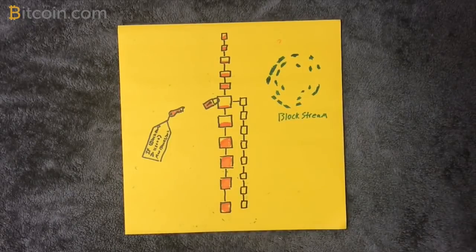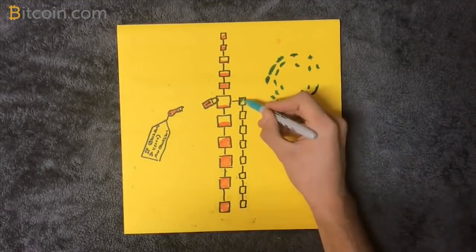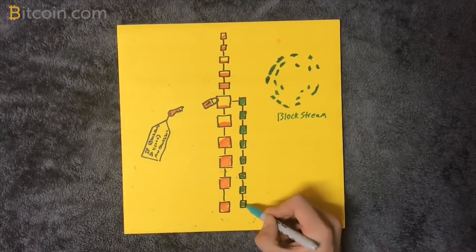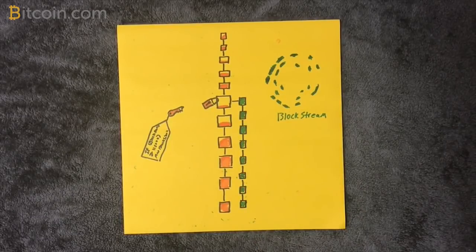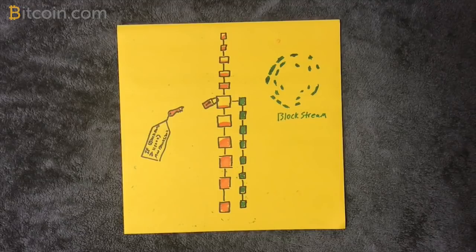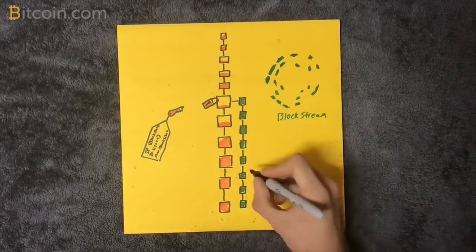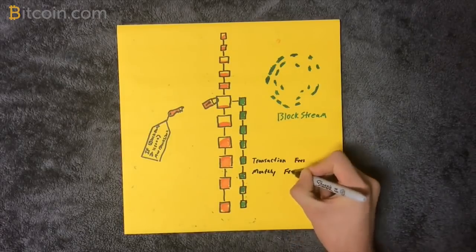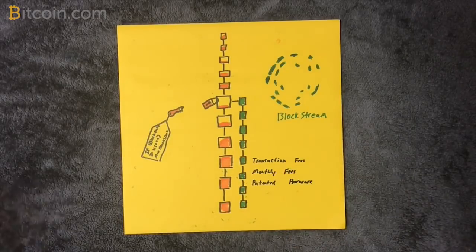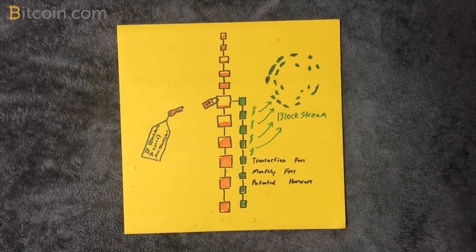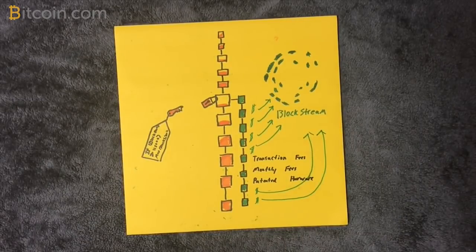Because Blockstream states that they plan to turn a profit by selling sidechains to businesses, allowing them to accept custom Bitcoin-backed chains that aren't subject to Bitcoin's high fees, taking small fees for every transaction, fixed monthly fees from the businesses, and selling the custom hardware needed to run them. This model is far more profitable if Bitcoin doesn't work properly.